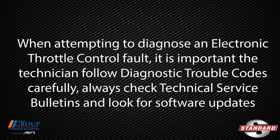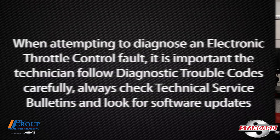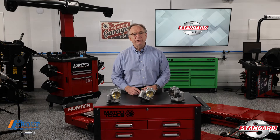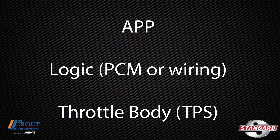When attempting to diagnose an electronic throttle control fault, it is important that the technician follow diagnostic trouble codes carefully. Always check technical service bulletins and look for software updates. Many times the DTC will be divided into three areas: APP logic, PCM or wiring, or throttle body TPS.